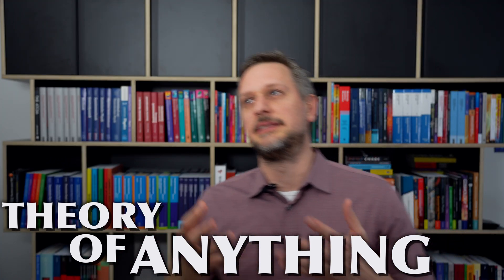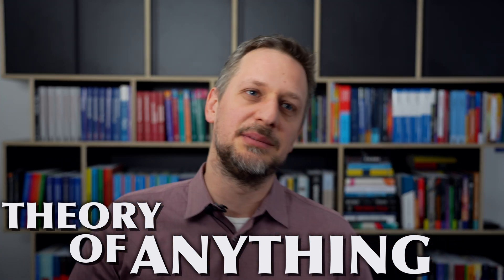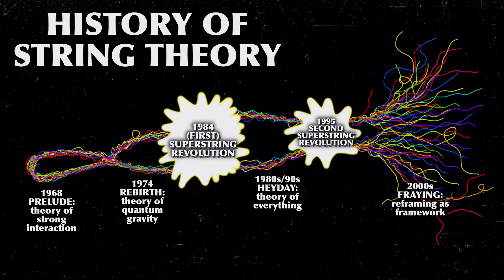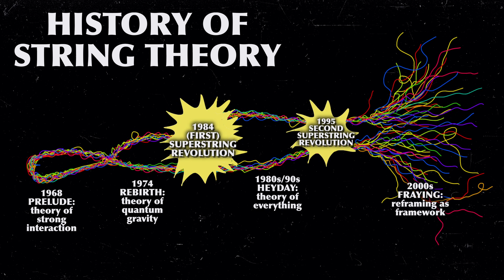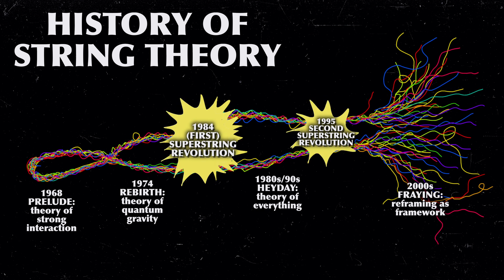People did find some ways around this, like the anthropic principle and the multiverse, but none of these solutions were especially appealing — certainly not as appealing as a unique mathematical description of the universe. So since the early 2000s the hype has cooled off a lot, and many people moved out of the field; it has become more niche again.